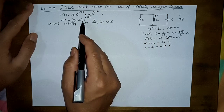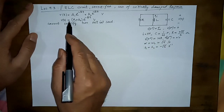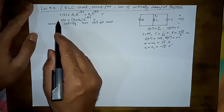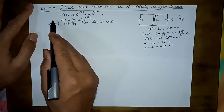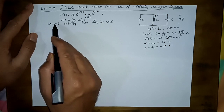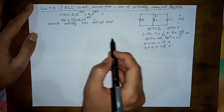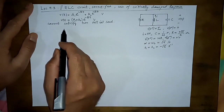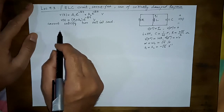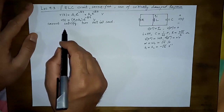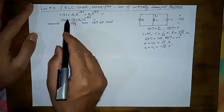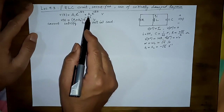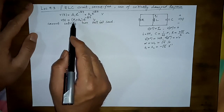What we mean by this is: if we put t = 0 in this equation, one initial condition can be satisfied. But the second condition cannot be satisfied — which can be found by taking the derivative and then putting t = 0. That is why in differential equation texts, for critically damped cases we do not use a solution of the form A1·e^(s1·t) + A2·e^(s2·t), because s1 and s2 are equal.